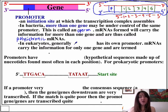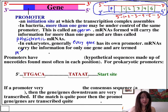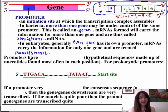Now, in eukaryotes, generally every single gene has its own promoter. mRNAs carry the information for only one gene, and as you guessed it, they are not polycistronic — they are monocistronic. Once again, a little more boring than our bacteria and archaea.